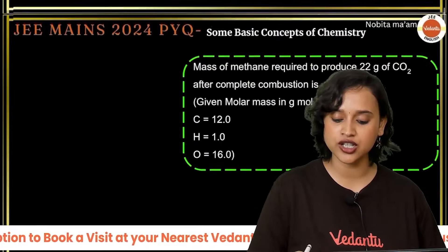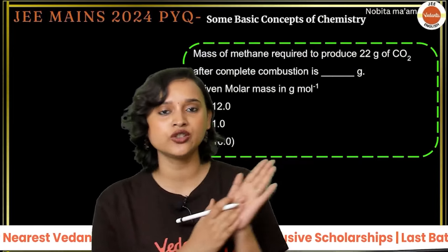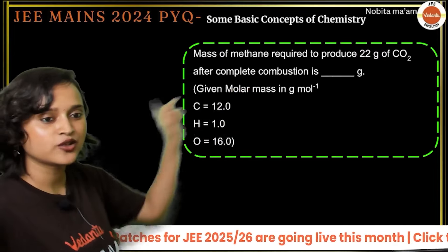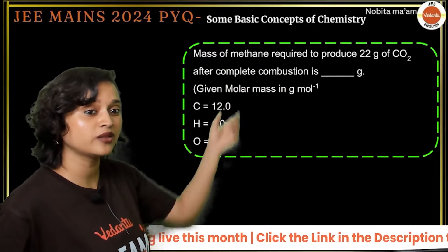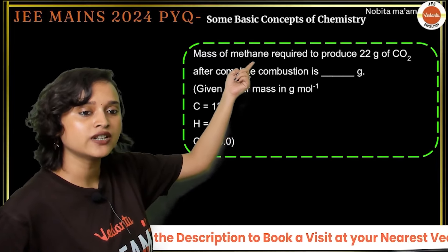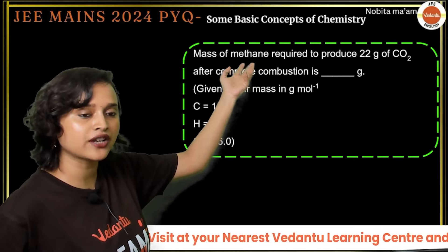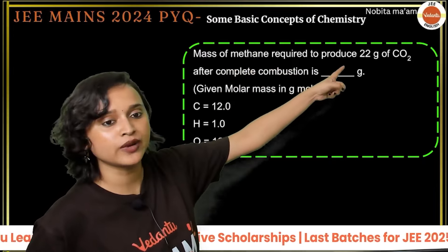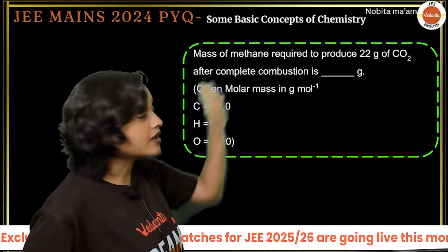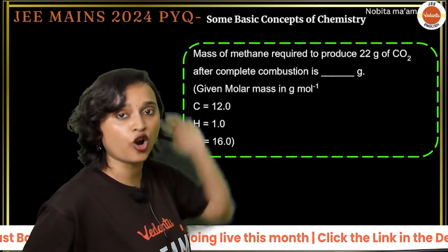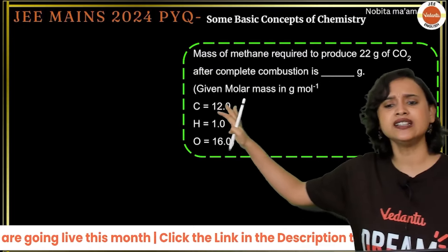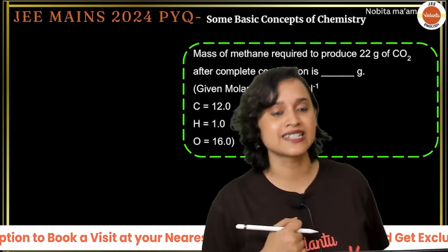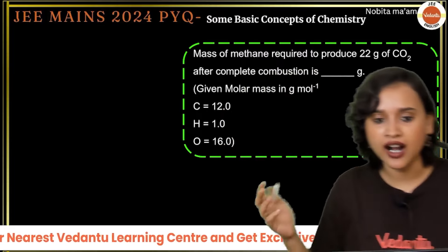The next question: what is the mass of methane required to produce 22 grams of carbon dioxide after complete combustion? Molar masses given: C = 12, H = 1, O = 16. Methane is CH₄ — one carbon atom and four hydrogen atoms.